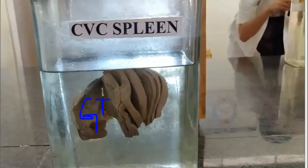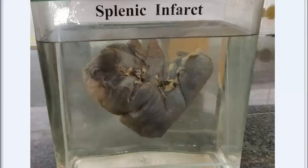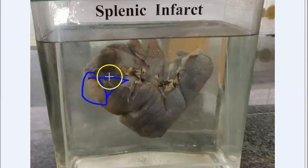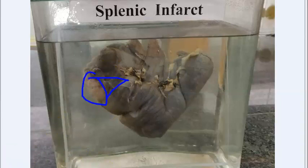Splenic infarct — there will be occlusion of the splenic artery or its branches; there can be thromboemboli. You will see a pale anemic wedge-shaped infarct — the wedge has its base at the periphery and apex pointing towards the hilum. In microscopy, you will see necrosis, inflammatory reaction, and fibrous scar.